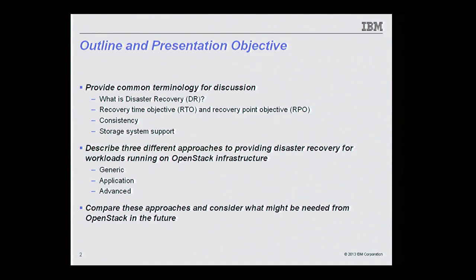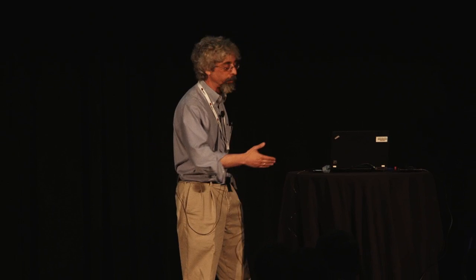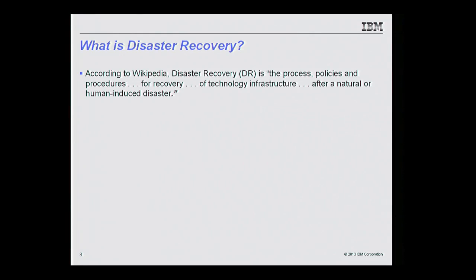Then I want to go over three different approaches to providing disaster recovery for workloads running on OpenStack infrastructure: a generic approach which uses only OpenStack mechanisms and makes no assumptions on the application or underlying storage; an application-specific approach which requires cooperation of the application; and an advanced approach that takes advantage of certain assumptions on the storage infrastructure. Finally, I want to compare these approaches and raise things we may want to see in OpenStack in the future.